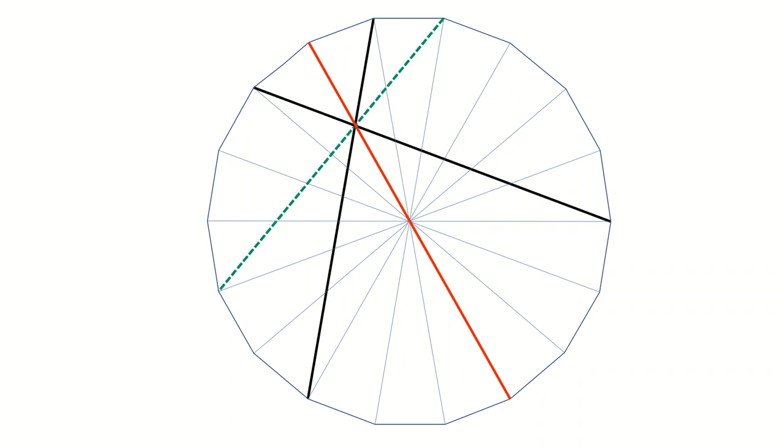Now, any one of these lines is an axis of symmetry. For example, this line is an axis of symmetry. So if you draw a line like this, there is a mirror to that which is like this. Or the green line that you see here has a mirror image like this. Everything is symmetric about this line.